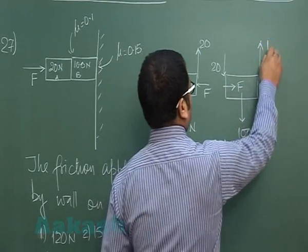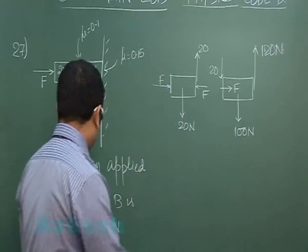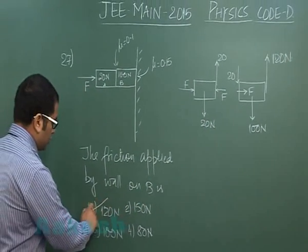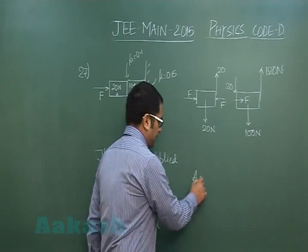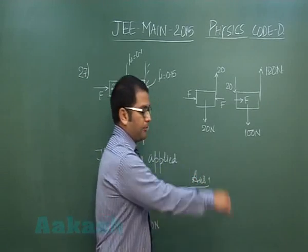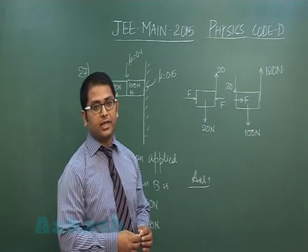Likewise, the same reaction F would be there and that would be 20, and this is 100 newton. So quite obviously this is at rest, so the friction here has to be 120 newton. And that goes to the first option. For question number 27, the answer is 1. Let's move to question number 28.